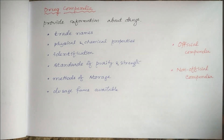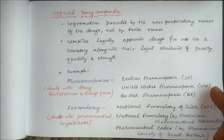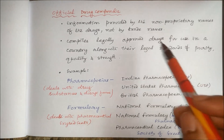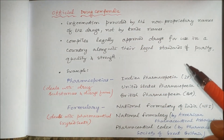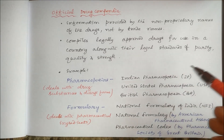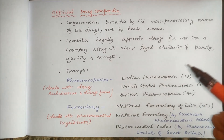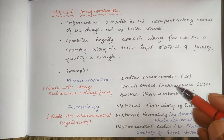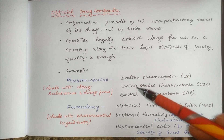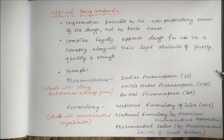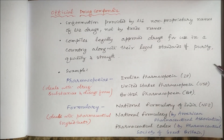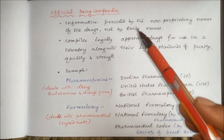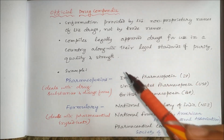Drug compendia can be official or non-official. Official compendia are available as pharmacopoeias or drug formularies. Official drug compendia provides information by the non-proprietary name or generic name of the drug, not by brand names. It compiles all drugs legally approved for use in a country — for example, Indian Pharmacopoeia for India, United States Pharmacopoeia for the US, and British Pharmacopoeia for the UK.